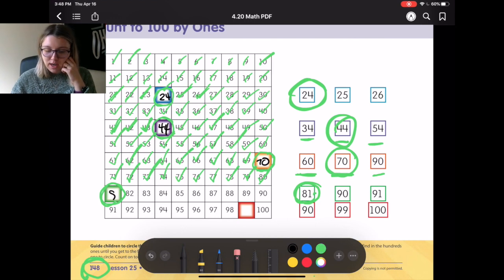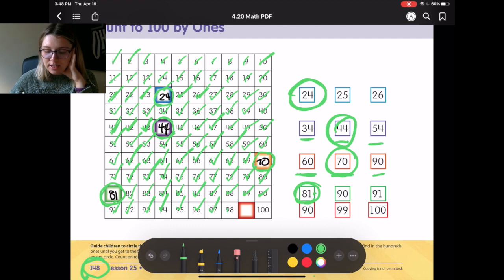So 81 goes right in the green box. So let's keep going. So we start with 81, 82, 83, 84, 85, 86, 87, 88, 89, 90, 91, 92, 93, 94, 95, 96, 97, 98.